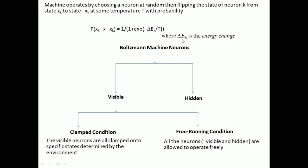Here ΔE_k is the change in energy—the change in the energy function of the machine resulting from the flip from state x_k to state minus x_k.